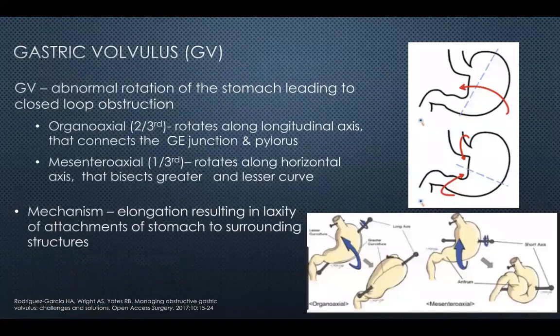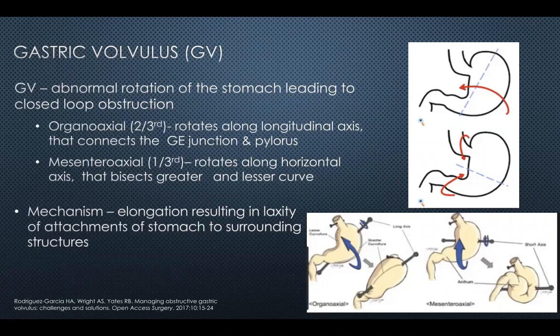I'll give a background on gastric volvulus, which is the abnormal rotation of the stomach leading to a closed loop obstruction. Most commonly, we see organoaxial volvulus, which rotates along the longitudinal axis connecting the GE junction and the pylorus. Less commonly, we see mesoaxial volvulus, which rotates along the horizontal axis bisecting the greater and lesser curves of the stomach.